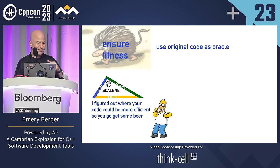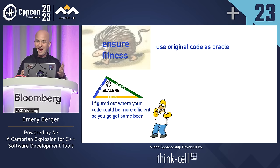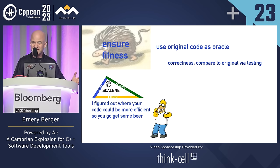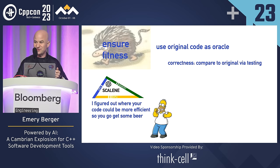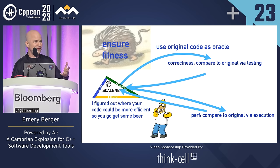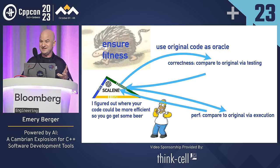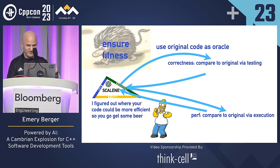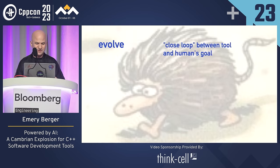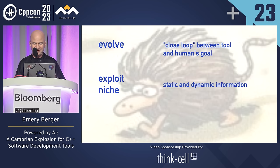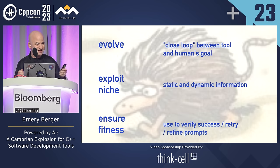The next step is ensuring fitness — this is how you survive. We want to make sure the AI is not going off the rails. The beauty of doing this in the context of a profiler is we have the original code. We just need to make sure the optimized code does the same thing. We can go back to the AI and ask it for tests, run the tests, and verify the two implementations are equivalent. You also want to verify that the optimization really did improve performance or reduce memory consumption — this can all be part of a validation loop.